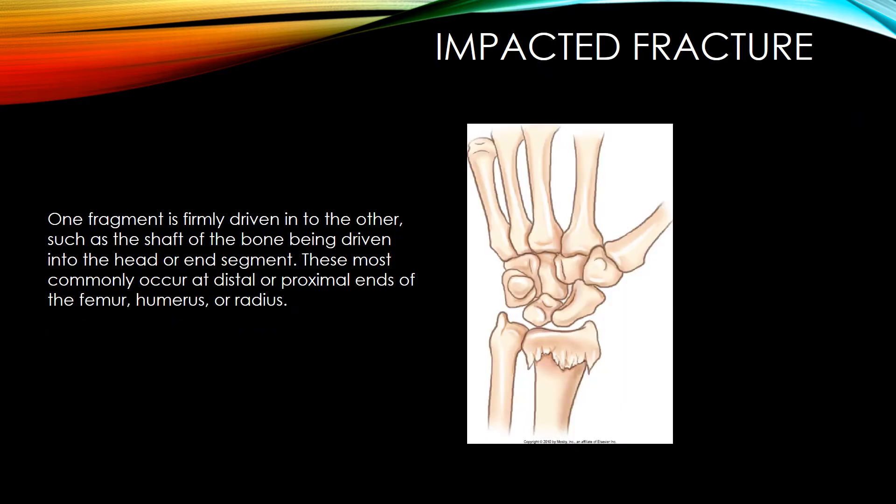An impacted fracture is one where one fragment is firmly driven into the other, such as the shaft of the bone being driven into the head or end segment. These most commonly occur at the distal or proximal ends of the femur, humerus, or radius.